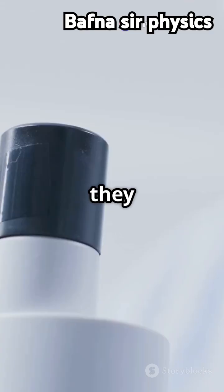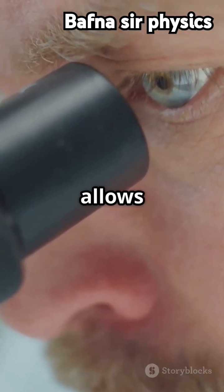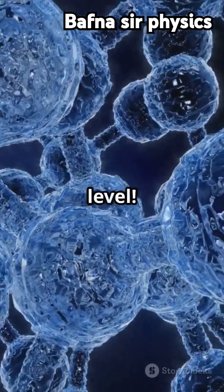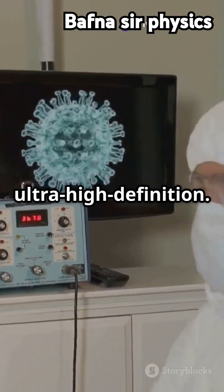Instead of using light, they use beams of electrons, which are teeny, tiny particles. This allows them to see things at the atomic level. Think of it like using a superpower to look at the world in ultra-high definition.